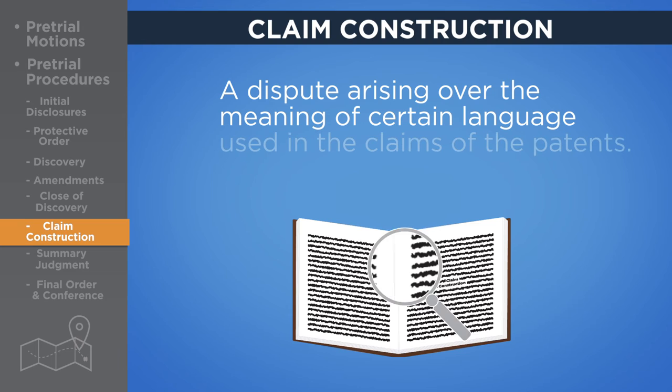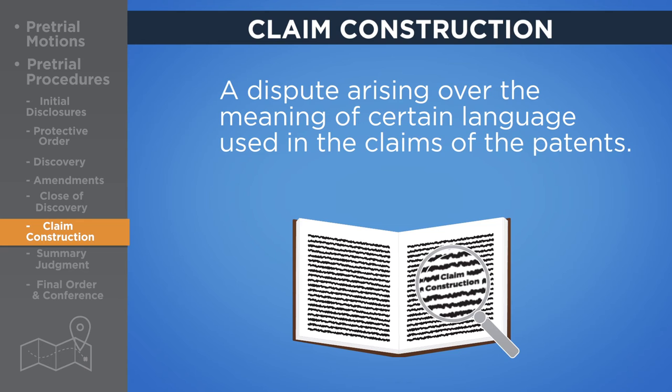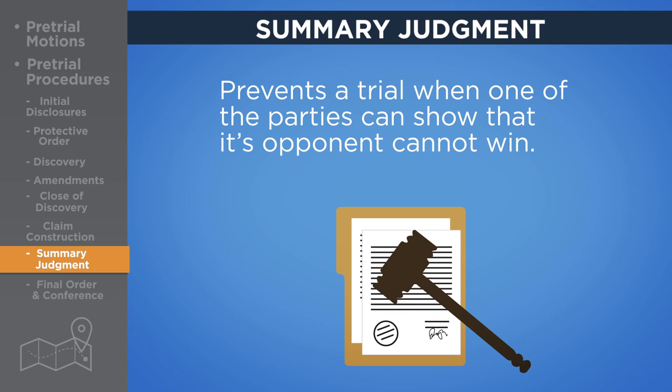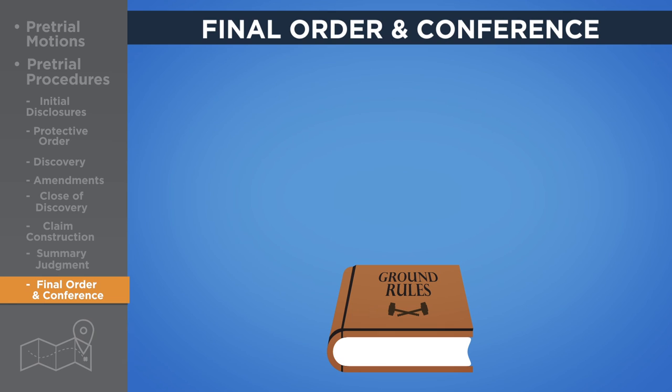In virtually every patent case, a dispute arises over the meaning of certain language used in the asserted claims of the patents at issue. These are called claim construction disputes and must be resolved by the judge before trial. Summary judgment is a procedure that prevents a trial when one party can show that its opponent cannot win — that is, if the evidence is so clear that no fact dispute exists and the law requires the case be decided in favor of the moving party, the court can decide the case without holding a trial.